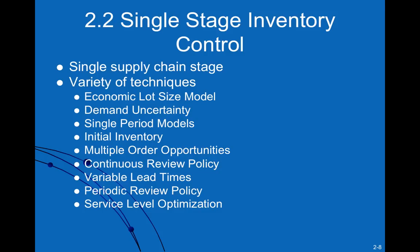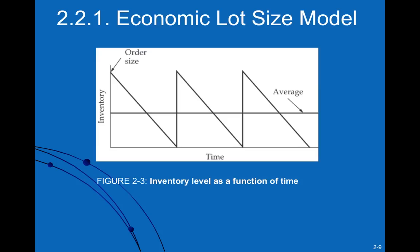Multiple order opportunities lead us to continuous review and periodic review inventory models. In continuous review, we monitor inventory levels and place orders based on the current level of stock — when we get to the reorder point, we place an order. We also have periodic review models where orders are placed at fixed time intervals. Lead times can also be variable. All of these decisions and techniques can be used in managing the supply chain. In our second video, we will explore the Economic Lot Size model.